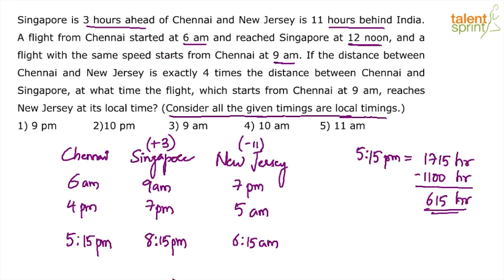Just convert to 24-hour clock if there is any confusion — that is how you find the local time for a given time in another place. Now look at the question: a flight from Chennai started at 6 am and reached Singapore at 12 noon. A flight with the same speed starts from Chennai at 9 am. We have to find out at what time that flight will reach New Jersey.